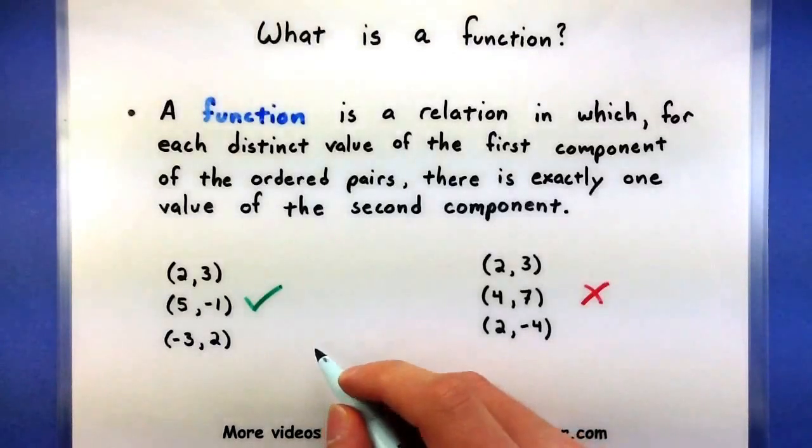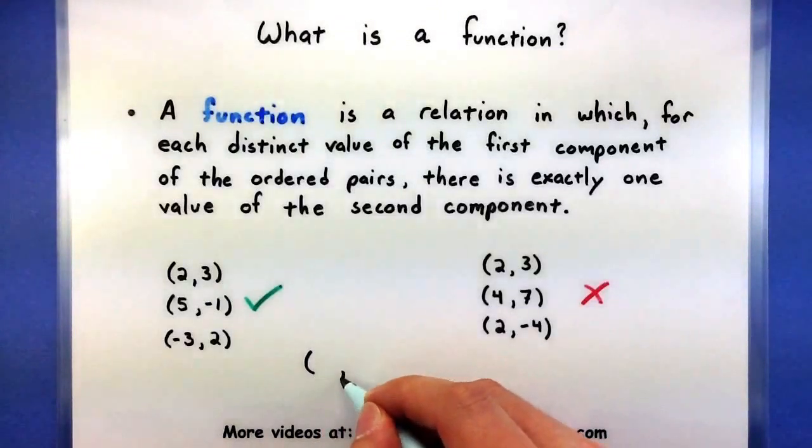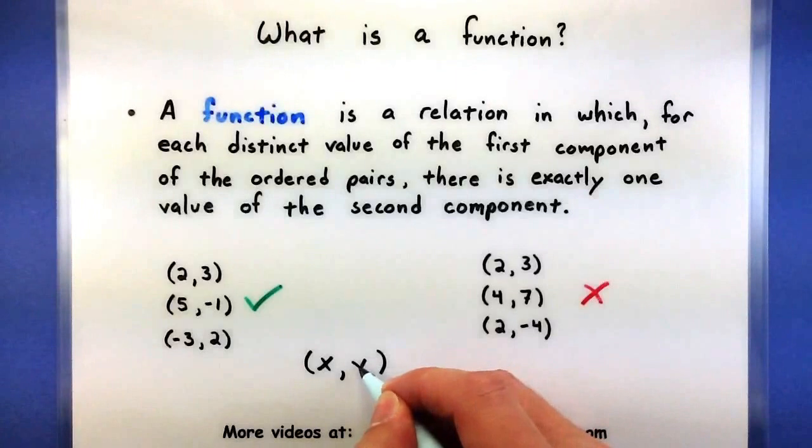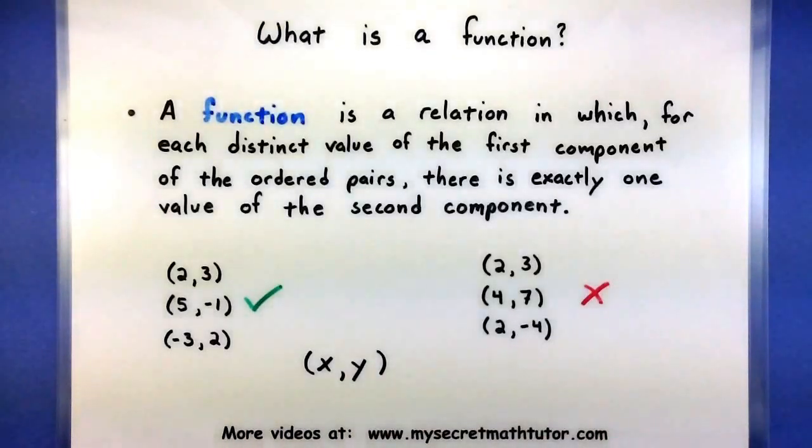Now, quickly before we get into domain and range, here's a way you can think of these ordered pairs. Since the second value depends on the first value, we can consider these types of variables an independent variable and a dependent variable. You're going to want to keep that in mind for this next part.